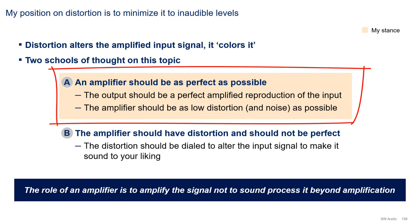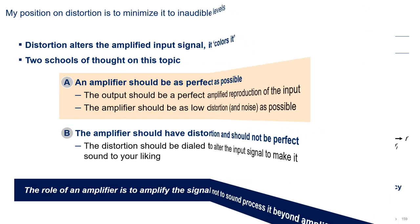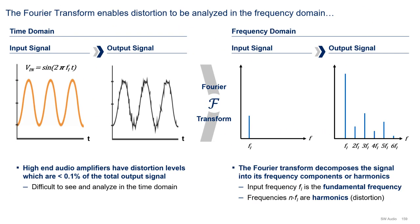My allegiance is to camp A: build the amplifier such that the distortion it adds is inaudible. But if you would like to color the input signal to have a specific sound of your liking, I believe this should be done to the line-level signal before feeding it to the amplifier. In other words, the amplifier is an amplification device — it is not a sound processing device beyond signal amplification.